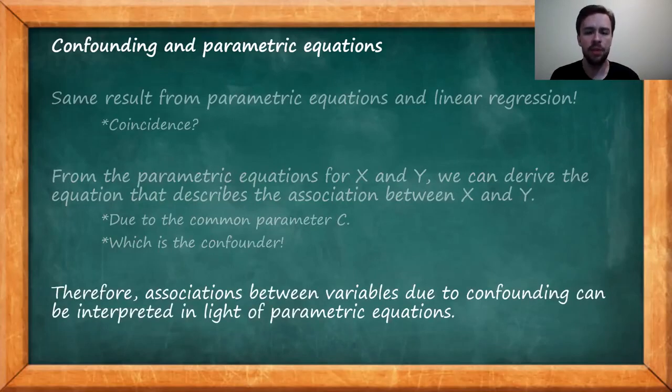And really, the overall conclusion of this video is that associations between variables due to confounding can be interpreted in light of parametric equations. We saw that we can use the notion that X and Y can be understood as a pair of parametric equations to arrive at an equation that describes the associational relationship between X and Y directly, thus helping us to understand why X and Y are related in the way that they are.